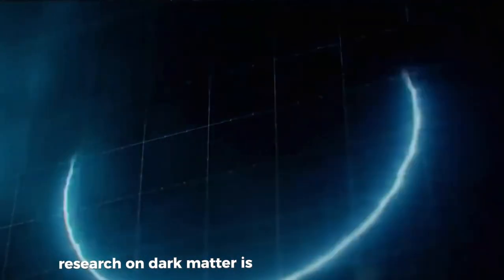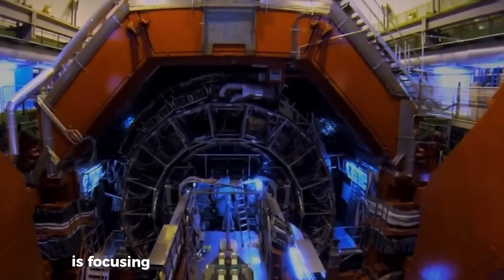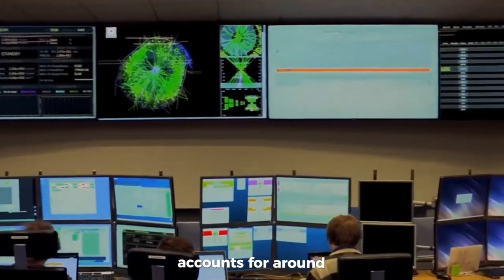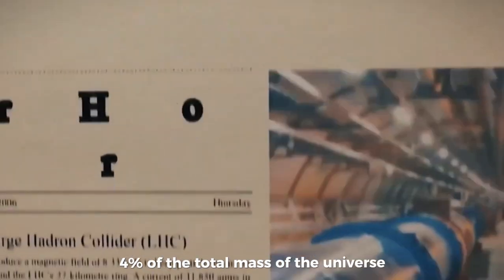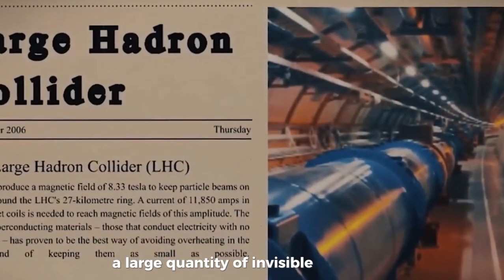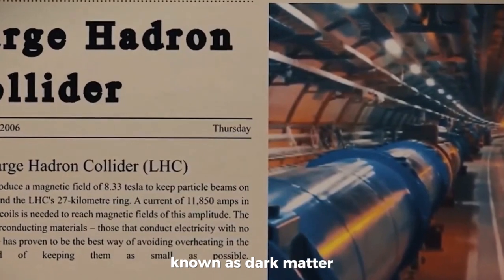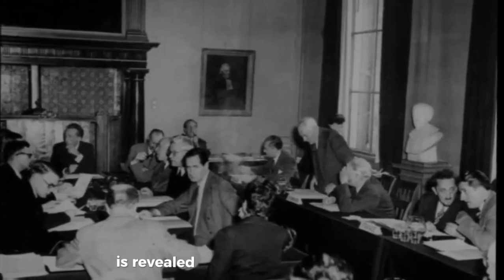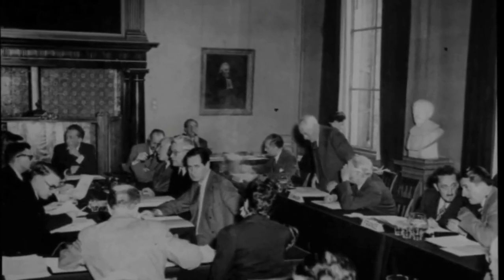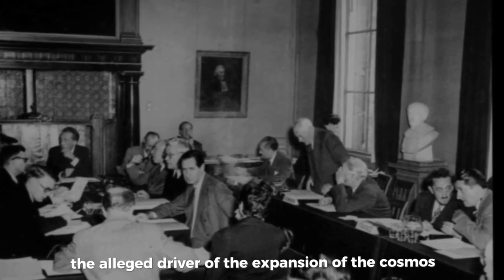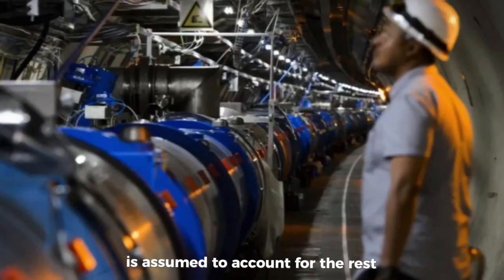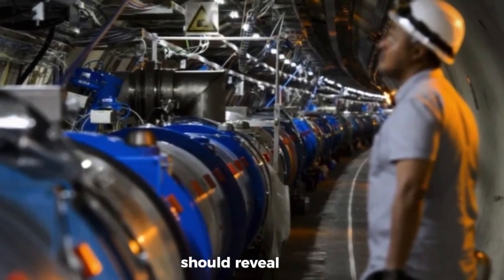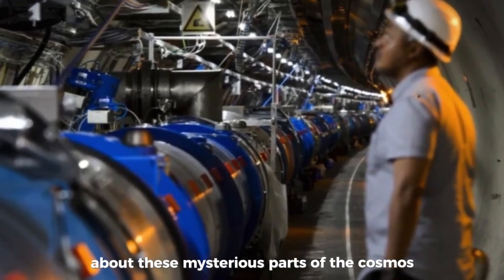Research on dark matter is another area that the LHC is focusing on. Based on what we know presently, observable matter accounts for around 4% of the total mass of the universe. A large quantity of invisible substance known as dark matter, which makes up approximately 25% of the universe, is revealed by the motion of galaxies. Dark energy, the alleged driver of the expansion of the cosmos, is assumed to account for the rest. More tests at the LHC, according to scientists, should reveal more about these mysterious parts of the cosmos.